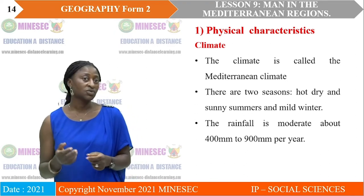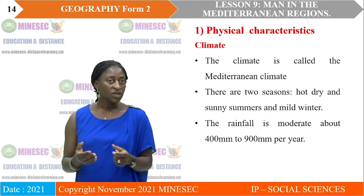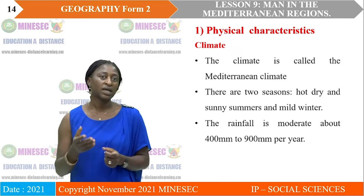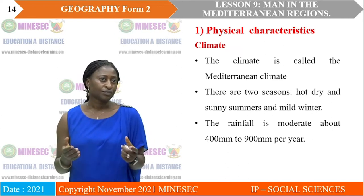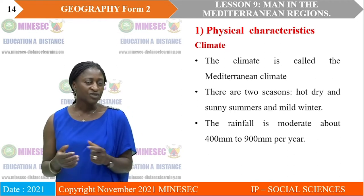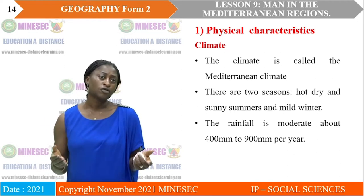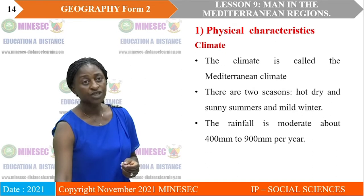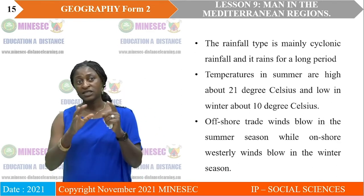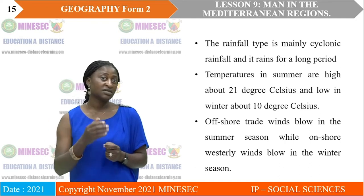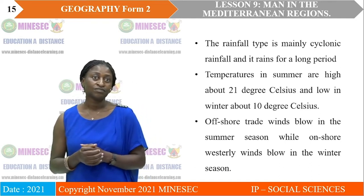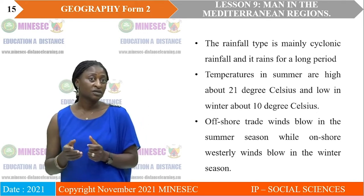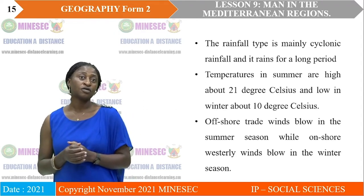This area has two seasons: the winter and the summer seasons — hot, dry, and sunny summers, and mild winters. There is a moderate rainfall of about 400 to 900 millimeters per year. The type of rainfall in this area is cyclonic rainfall, which falls over a very long period of time but is not very heavy — it lasts for a long period of time.